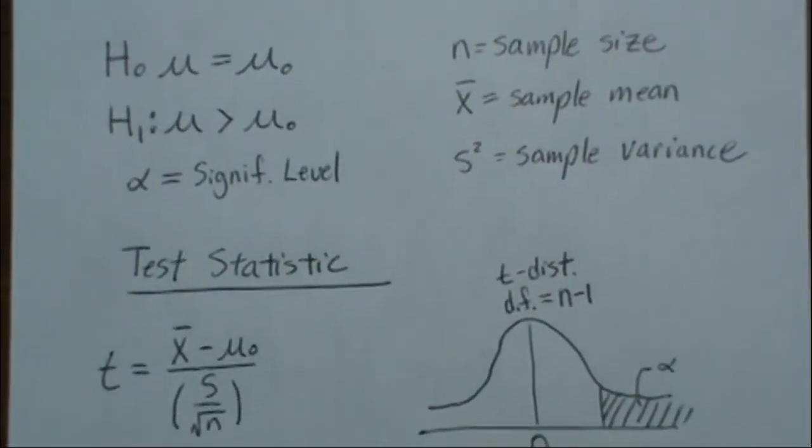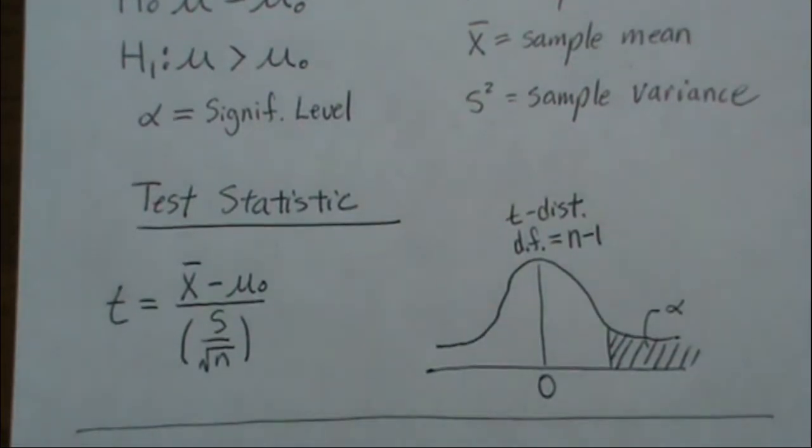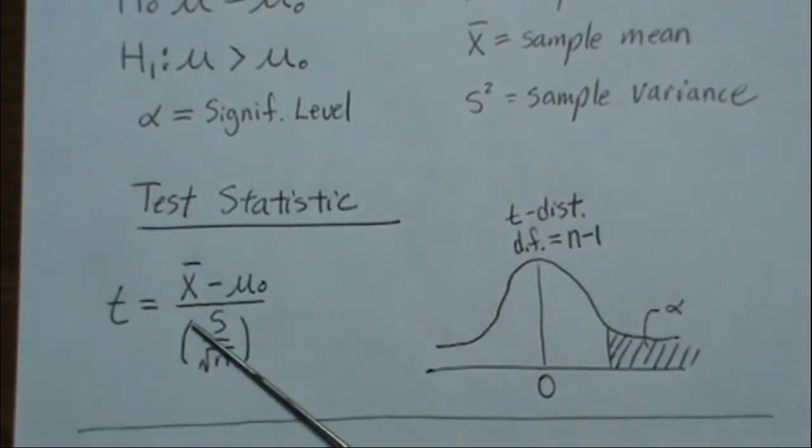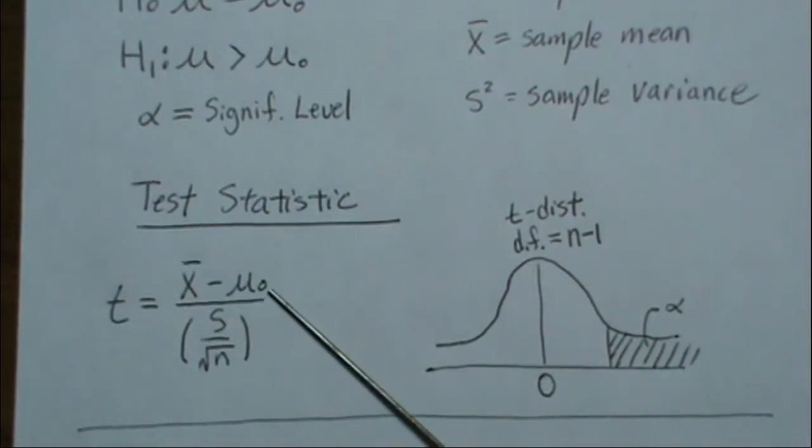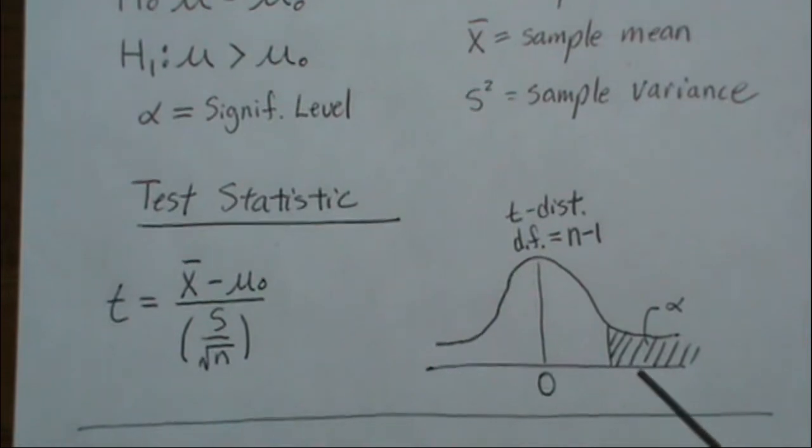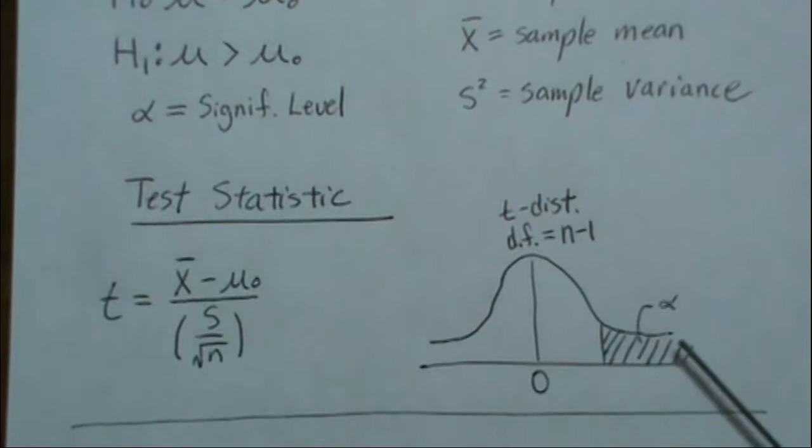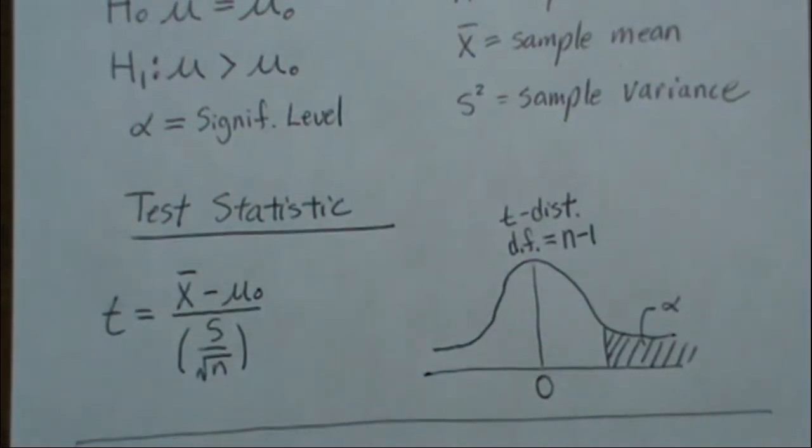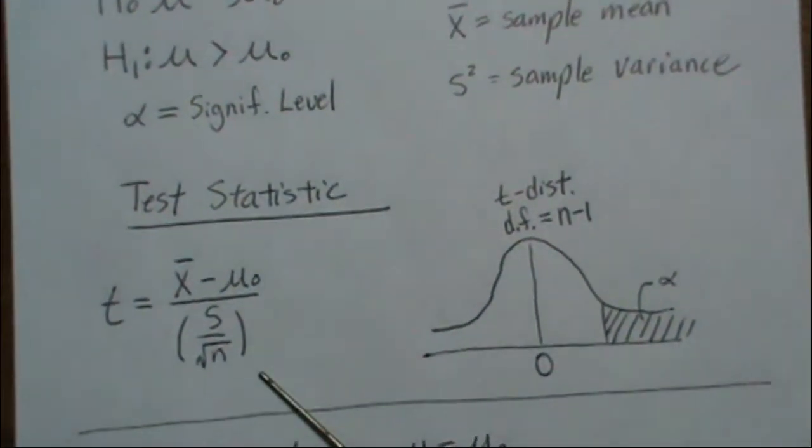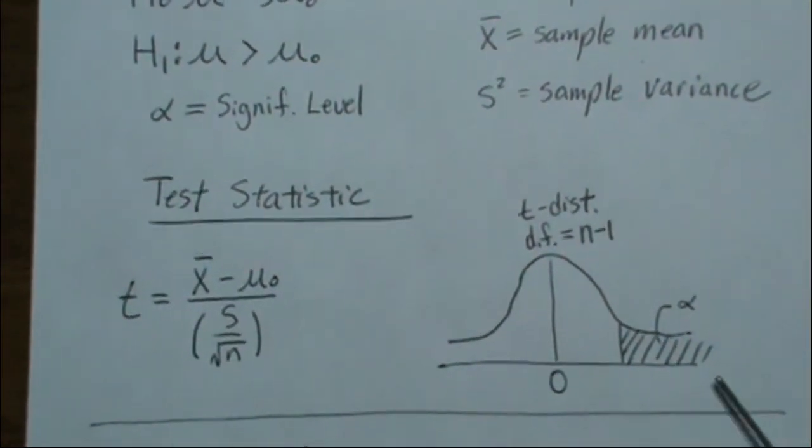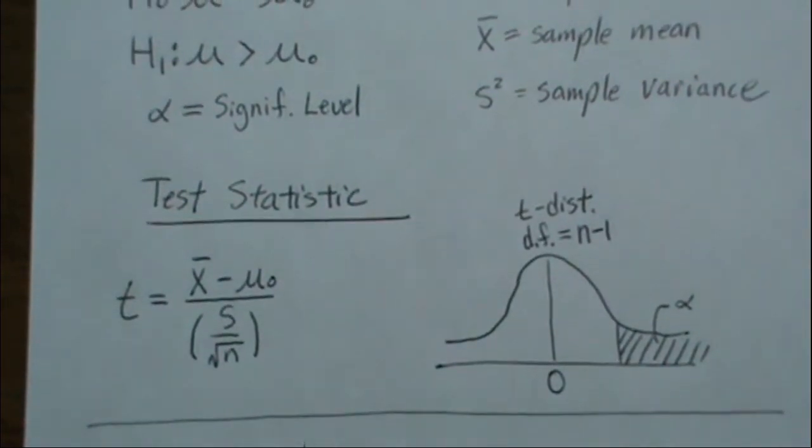Our test statistic, taught in elementary statistics class, is the sample mean minus our hypothesized value divided by the standard deviation divided by the square root of n. It generates a t-distribution with n-1 degrees of freedom. We find the tail area where it equals α, then calculate the test statistic and see where it falls. If it's greater than this value, we reject the null hypothesis. If it's less, we do not reject.